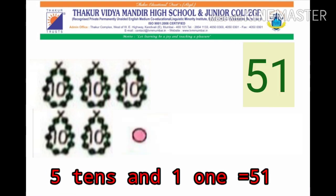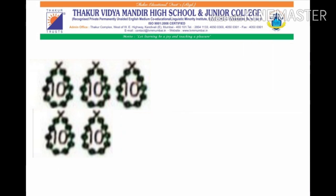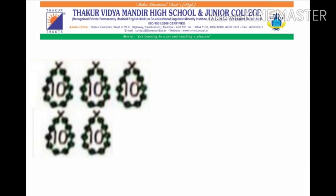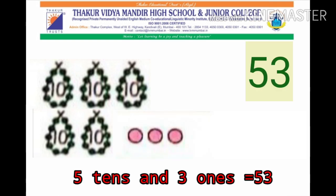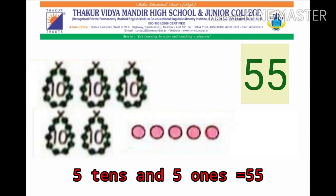5 tens and 1 one is equal to 51. 5 tens and 2 ones is equal to 52. 5 tens and 3 ones is equal to 53. 5 tens and 4 ones is equal to 54. 5 tens and 5 ones is equal to 55.